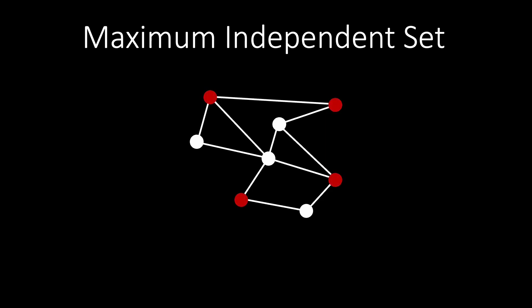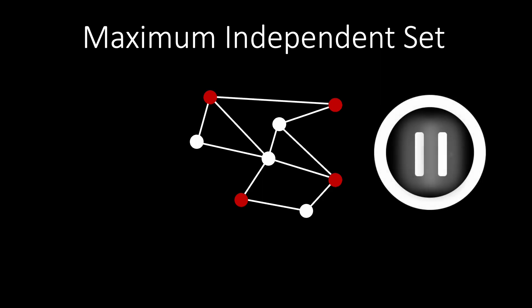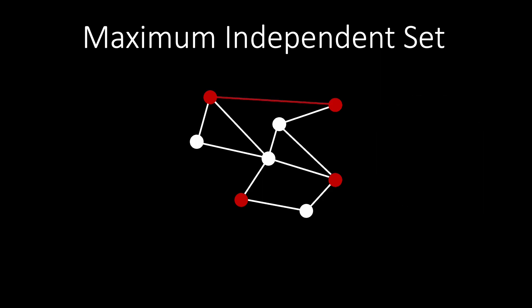Are you able to verify if the set of red vertices forms an independent set? Indeed, the two marked vertices at the top are connected by an edge. Hence, the red vertices do not form an independent set. We need to remove one of the two vertices that are incident to the same edge. If we remove the left vertex, we can replace it with its neighbor to get an independent set of size 4.